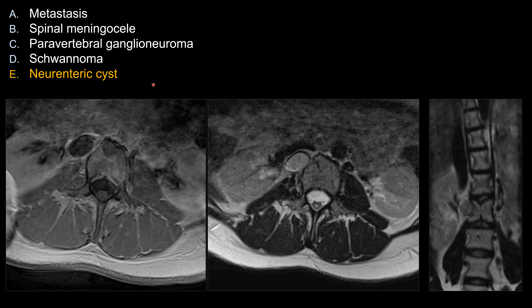What about the other answers that do not work as well for this case? For example, choice A, metastasis — metastasis should look a lot more aggressive, showing an enhancing lesion with perhaps invasion of adjacent osseous structures, or at least enhancement in the surrounding tissue or edema. For choice B, spinal meningocele, I need to see a direct communication between the thecal sac and the cystic lesion in order to call it a meningocele — otherwise it's not a classic appearance at all.